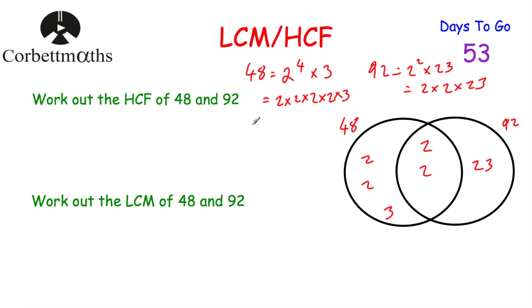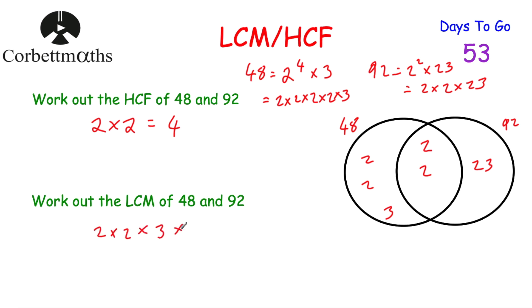To find the highest common factor — the largest number that divides both — we multiply the numbers in the middle: 2 × 2 = 4. So the highest common factor of 48 and 92 is 4. For the lowest common multiple — the first number in both times tables — we multiply all numbers in the Venn diagram: 2 × 2 × 3 × 2 × 2 × 23. On the calculator that gives 1,104. So the lowest common multiple of 48 and 92 is 1,104.